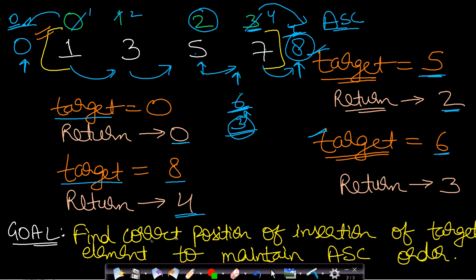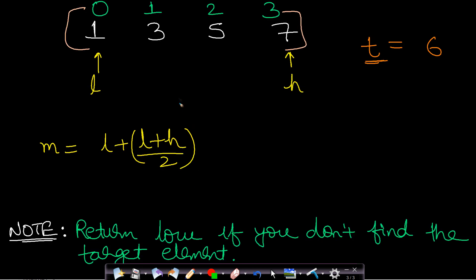Our goal is to find the correct position of insertion of the target element to maintain ascending order. This problem is straightforward and you can use a linear search to solve it in O(n), but to improve the time complexity you can use binary search.